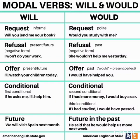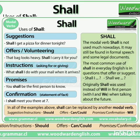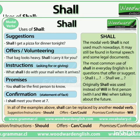'Will' is used in present tense for request and refusal; 'would' in past tense. Both are used in conditional clauses. Now the functions of 'shall': suggestion — 'Shall I get a pizza for dinner tonight?'; confirmation — 'I shall meet you there at seven o'clock'; offer — 'That bag looks heavy, shall I carry it for you?'; and instructions — 'What shall I do with your mail when it arrives?'